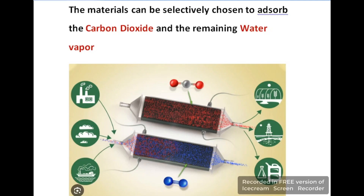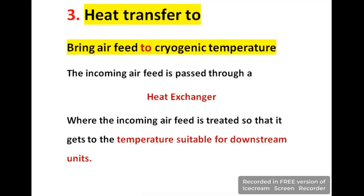These molecular sieves are porous materials having very small size pores in their structure. Different material sieves are used to absorb carbon dioxide and water vapors. After removing CO₂ and water vapor, heat exchangers are used to treat the air so that it reaches a suitable temperature for downstream units for further processing.